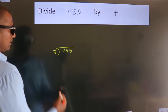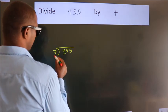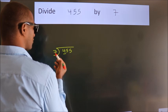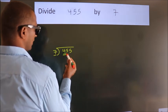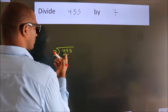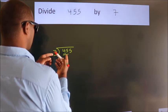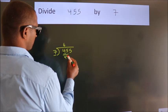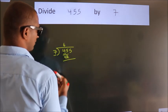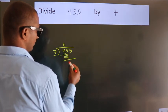Next. Here we have 4, here 7. 4 is smaller than 7, so we should take two numbers, 45. A number close to 45 in the 7 table is 7 times 6, 42. Now we should subtract. We get 3.